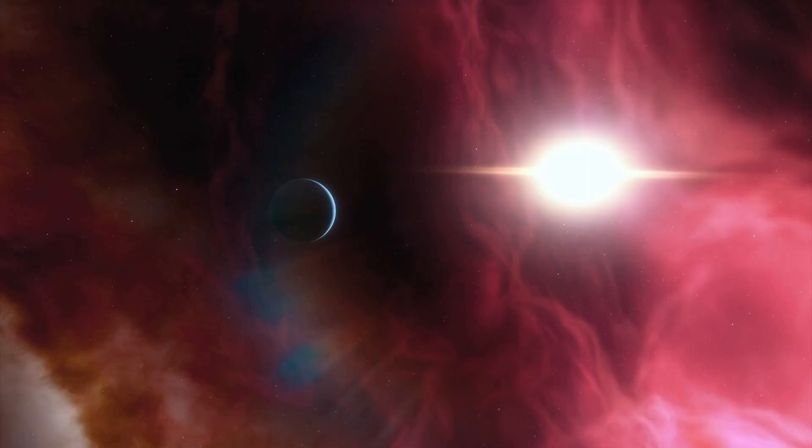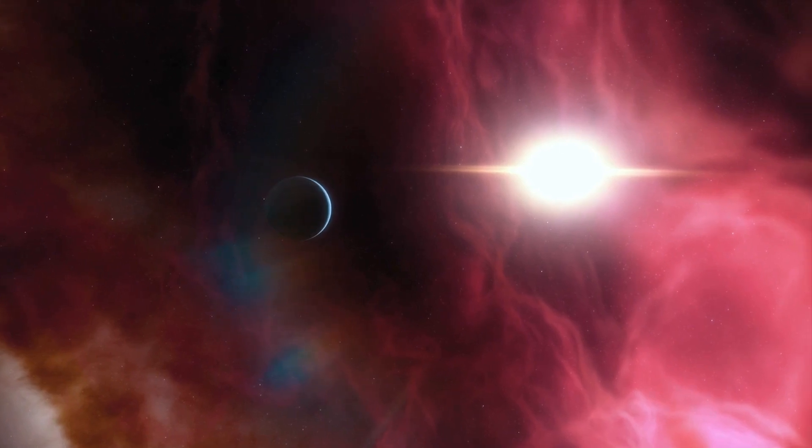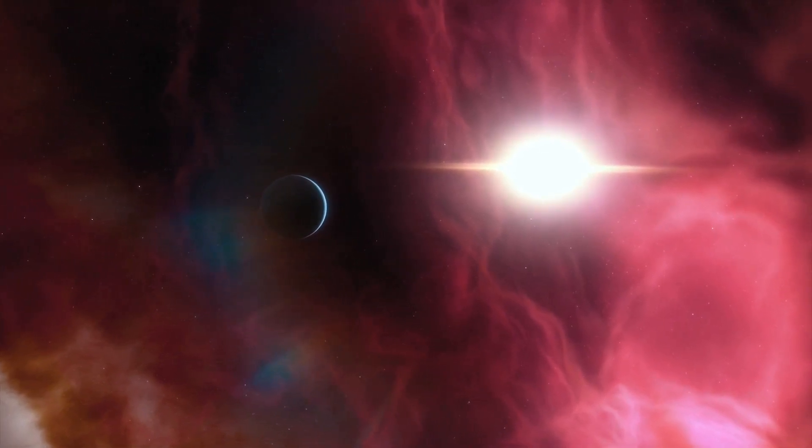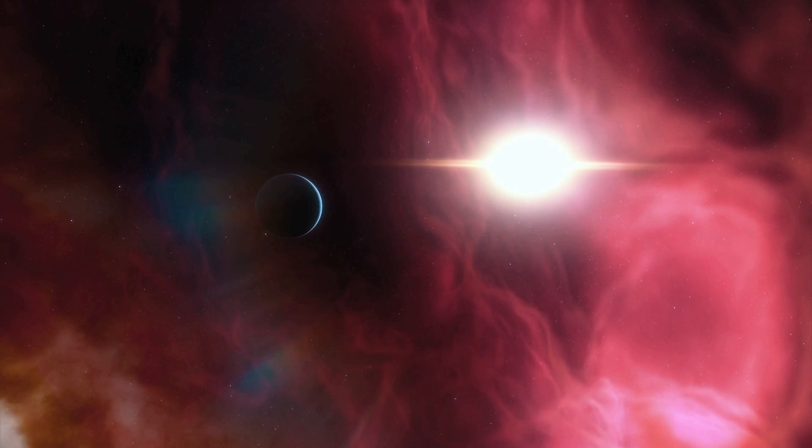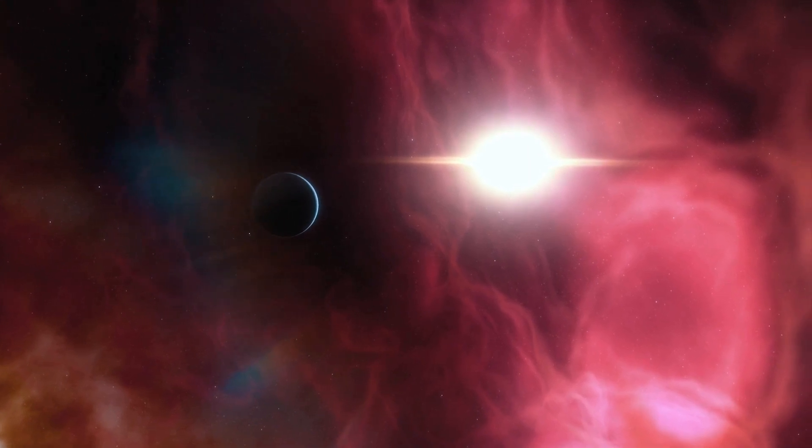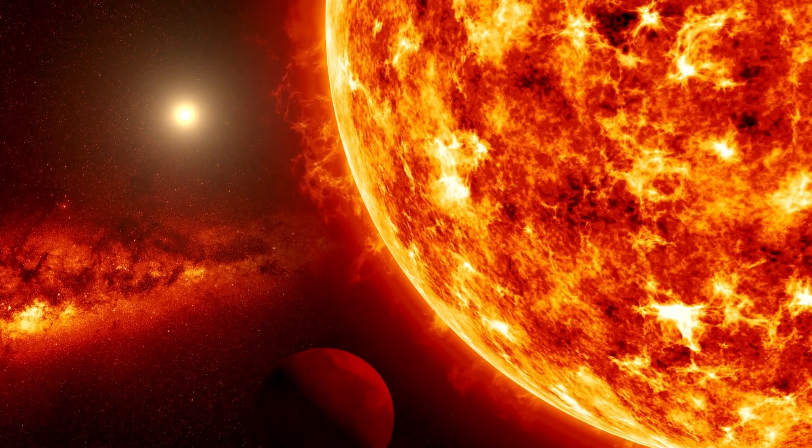With a year that lasts just 112 Earth days and a distance from its star that is 20 times closer than Earth is to the Sun, it is likely that one side of the planet is always bathed in daylight, while the other side remains in perpetual darkness.